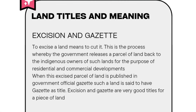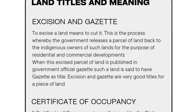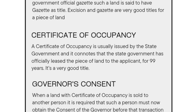Under land titles, we have Excision and Gazette. To excise a land means to cut it. This is the process whereby the government releases a parcel of land back to the indigenous owners for the purpose of residential and commercial development. When this excised parcel of land is published in the Government's Official Gazette, it is said to have Gazette as its title. Both Excision and Gazette are very good titles. Now, what of Certificate of Occupancy, also known as C of O? A Certificate of Occupancy is issued by the state government and connotes that the state government has officially released the parcel of land to the applicant for 99 years.